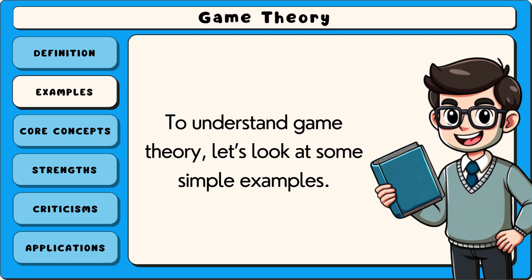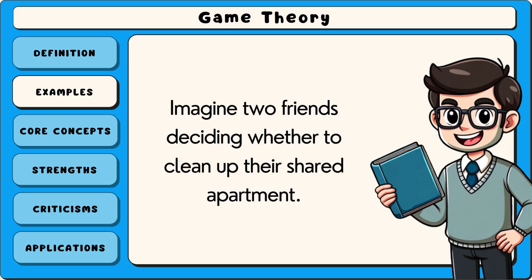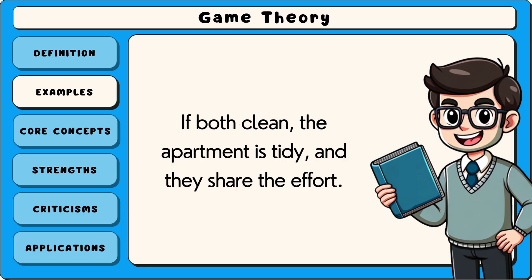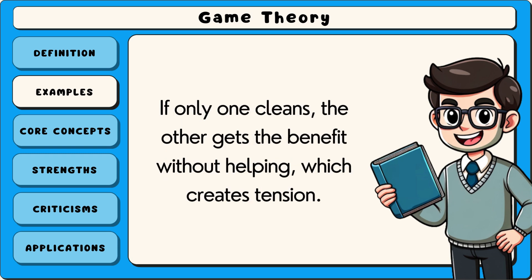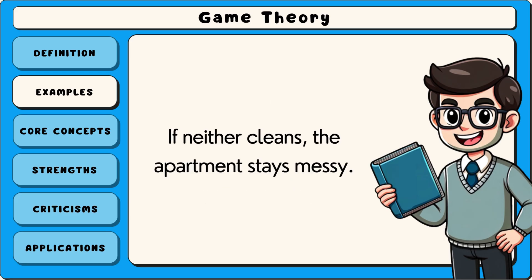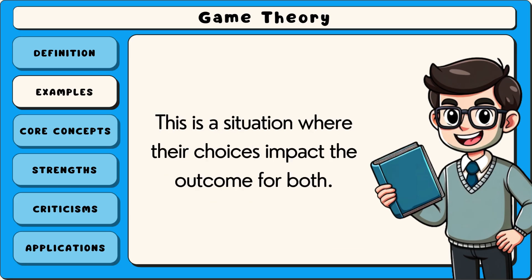To understand game theory, let's look at some simple examples. Imagine two friends deciding whether to clean up their shared apartment. If both clean, the apartment is tidy and they share the effort. If only one cleans, the other gets the benefit without helping, which creates tension. If neither cleans, the apartment stays messy. This is a situation where their choices impact the outcome for both.